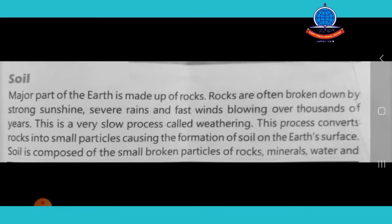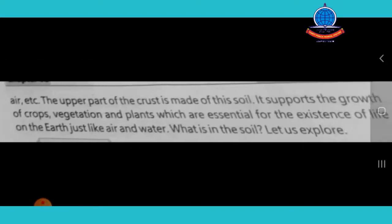Soil is composed of small broken particles of rock, minerals, water and air. The upper part of the earth's crust is made up of soil. It supports the growth of crops, vegetation and plants, which are essential for the existence of life on the earth, just like air and water.